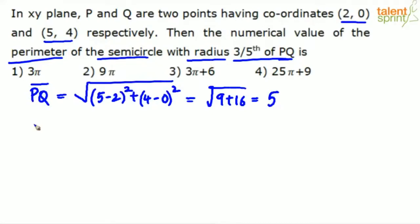Now he says the radius R of semicircle is 3/5 of PQ. So this is 3/5 into PQ, which is 5, which is 3 units. So the radius here is 3 units.